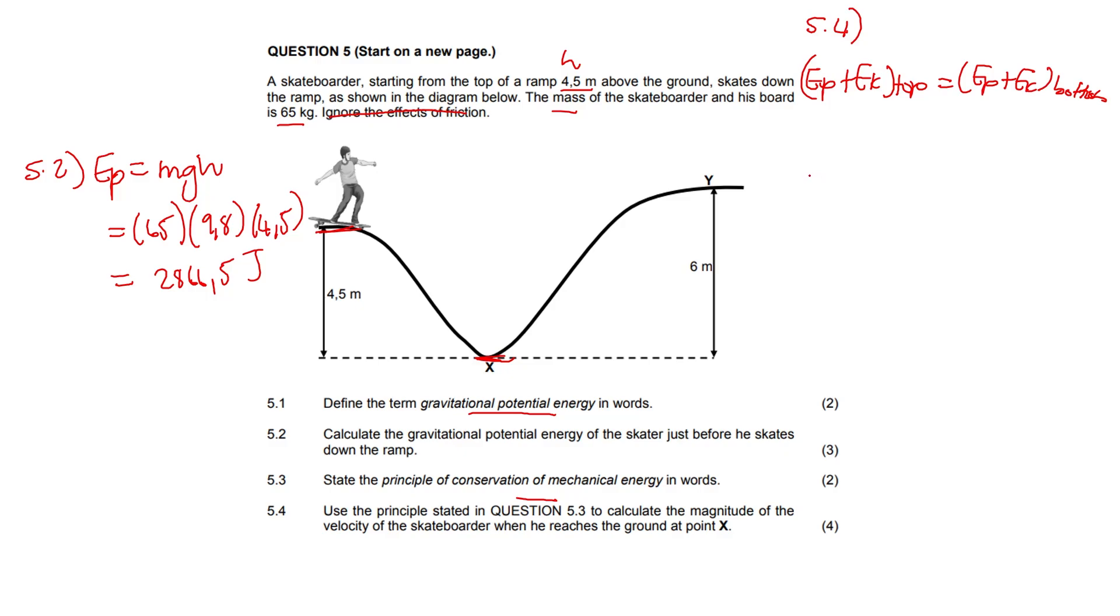Potential energy at the top—we've already calculated that in the previous question, and that was 2866.5. Do we have kinetic energy at the top? No. Why? Because he's stationary. Remember, kinetic energy is the energy because of the motion. So it's zero. Then when he is at the bottom here, when he reaches the ground, he doesn't have potential energy, so that is zero. But he does have kinetic energy, so we write down the formula because we have not calculated it yet.